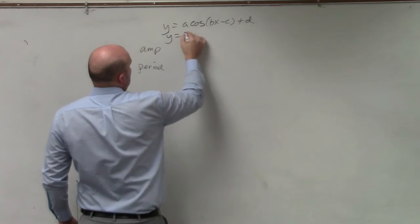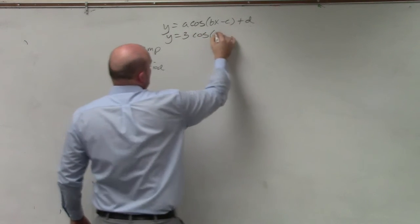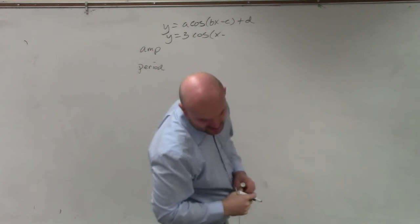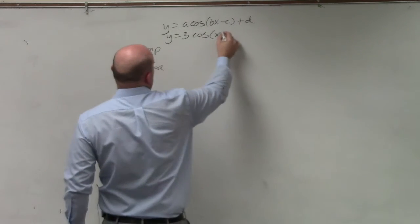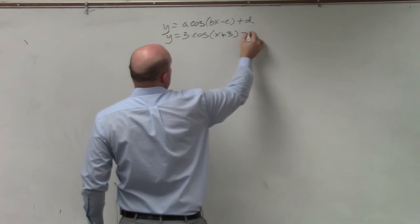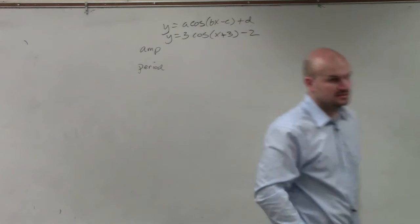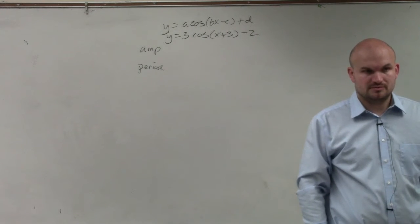Problem 64: y equals 3 cosine of x plus 3 minus 2. Correct? Yes, we're good.